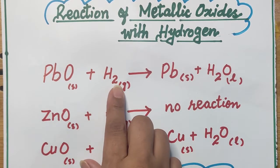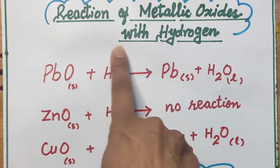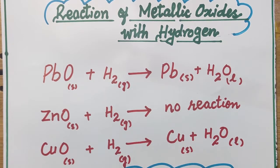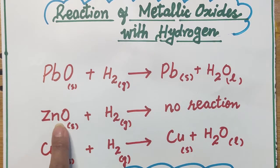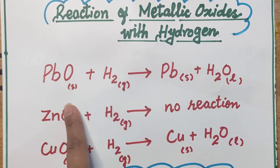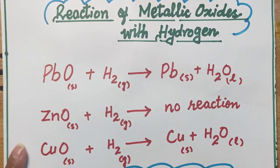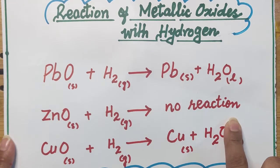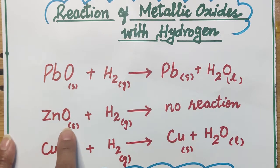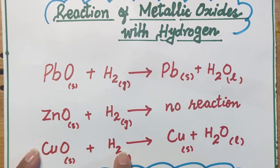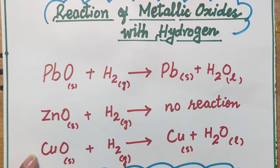Now let's discuss the reactions. Hydrogen acts as a reducing agent to take oxygen from lead oxide, and lead is extracted as a metal. Similarly, zinc oxide can react with hydrogen, but this reaction does not take place — zinc oxide does not react with hydrogen. So hydrogen is not used as a reducing agent for zinc oxide. For the rest of the least reactive metal oxides, hydrogen can be used as a reducing agent, except for zinc oxide.